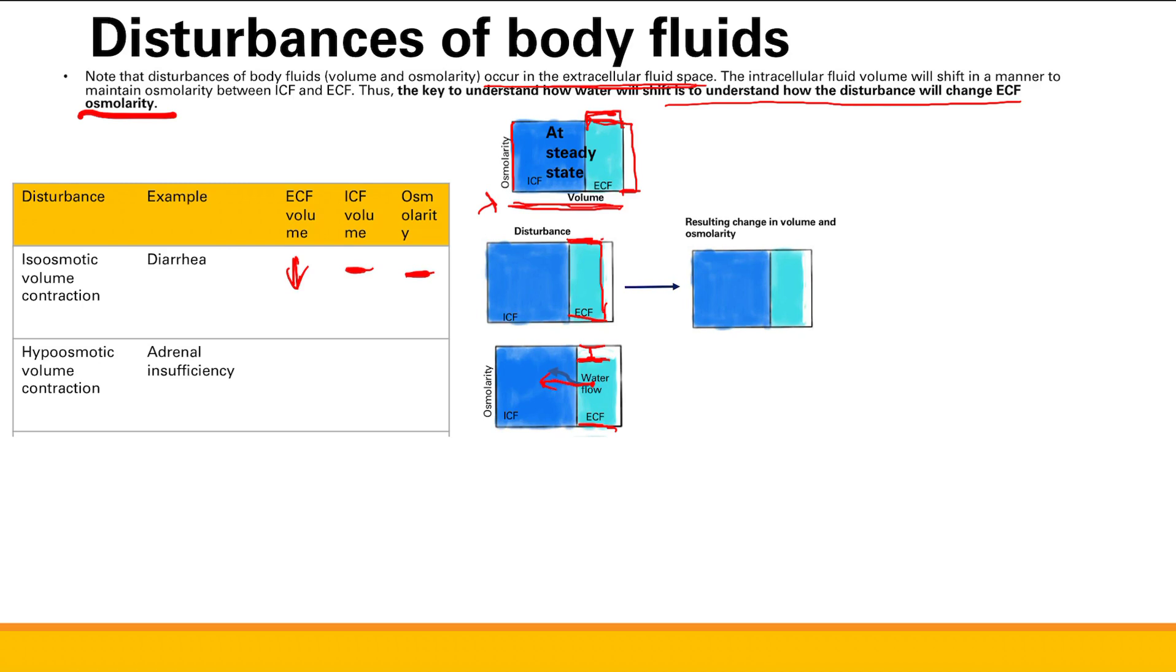So what will our net ECF volume be? Net ECF volume will be down. And what will our net ICF volume be? We just have extra water coming in, so ICF volume actually goes up. And how will our net osmolarity be? You had a decreased osmolarity, it's going to equalize a little bit, but overall, compared to normal, your osmolarity goes down. Net osmolarity goes down.